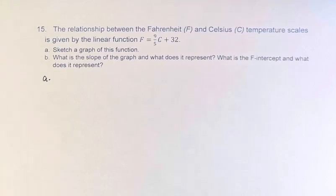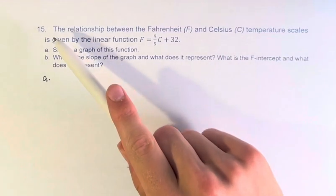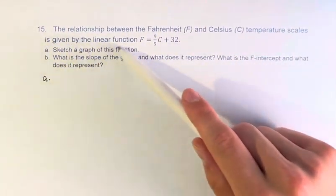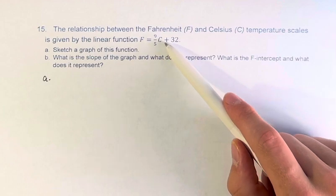Hello and welcome back to another video. In this problem, we're asked: the relationship between Fahrenheit and Celsius temperature scales is given by the linear function F = 9/5 C + 32.